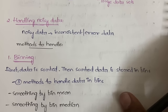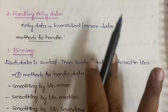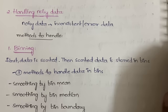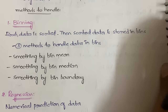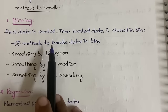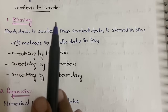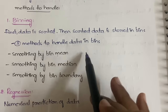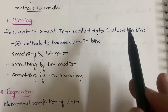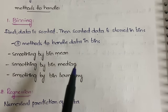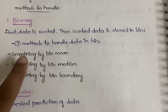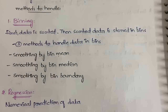For handling noisy data — which is inconsistent or erroneous data — we have three methods: binning, regression, and clustering. In binning, you first sort the data including the error values, then store the sorted data into bins. Once stored, you apply a smoothing process to remove or replace the error values. Smoothing can be done by mean, median, or boundary.